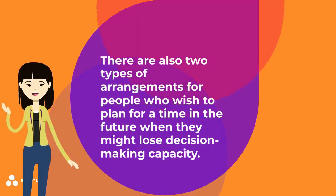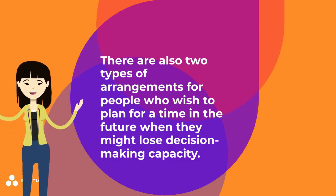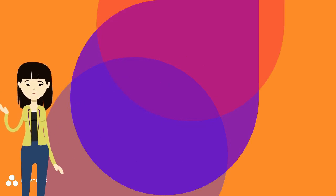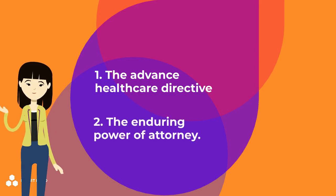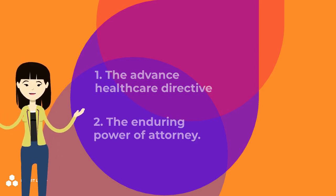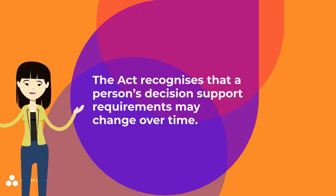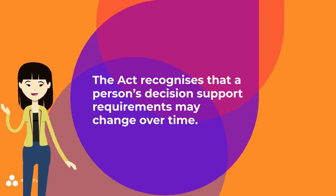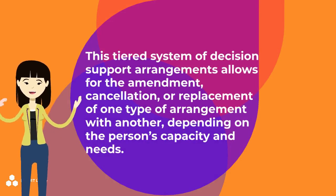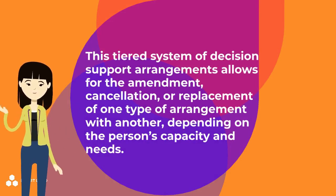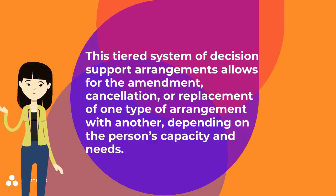There are also two types of arrangements for people who wish to plan for a time in the future when they might lose decision-making capacity. These are: 1) The Advanced Healthcare Directive, and 2) The Enduring Power of Attorney. The Act recognises that a person's decision support requirements may change over time. This tiered system of decision support arrangements allows for the amendment, cancellation or replacement of one type of arrangement with another, depending on the person's capacity and needs.